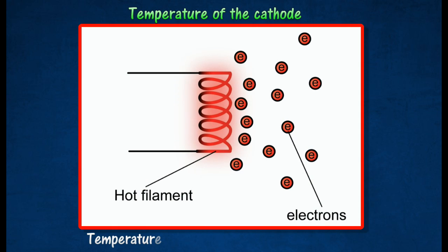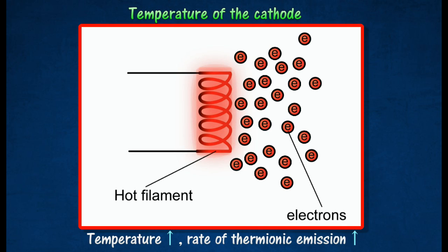When the temperature increases, the rate of thermionic emission also increases. This is because more electrons will gain enough energy to break free from the metal surface at higher temperature.